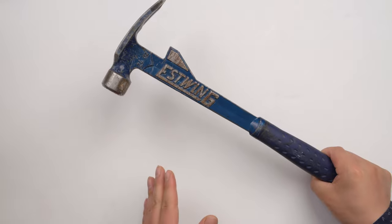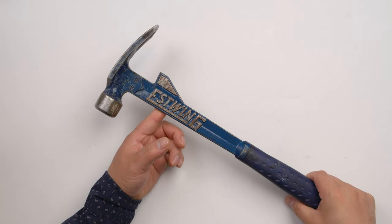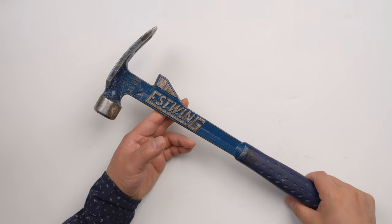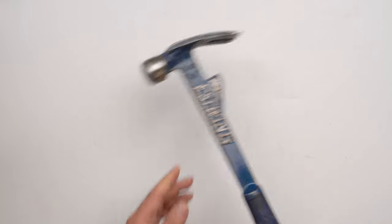This is 24 ounces. Usually for a framing hammer, you don't want it to be really light. You want to have some weight so you can swing.